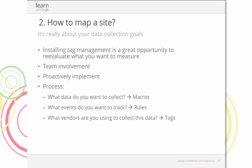Next is mapping the site. This is a great opportunity for marketing and IT teams to evaluate what they currently measure and what data they want to collect following installation. Track your site mapping details in a spreadsheet — look at what events you want to measure through your rules, what data you want to collect through your macros, and which vendors you want to use through your tags.